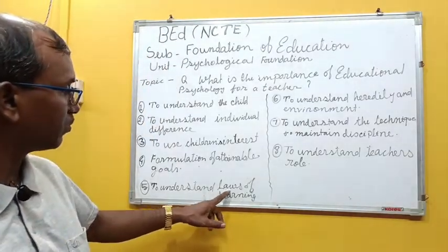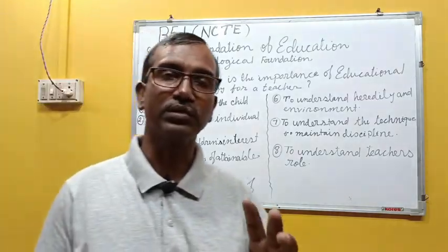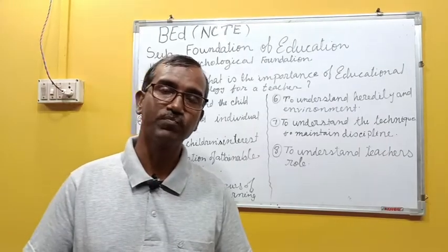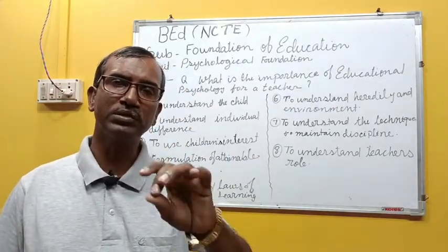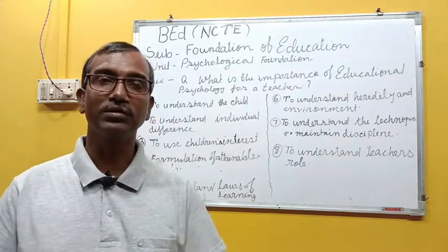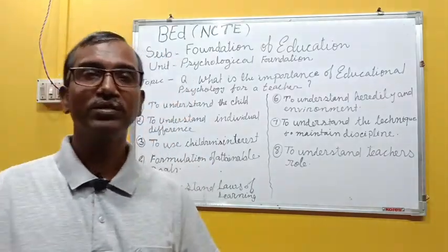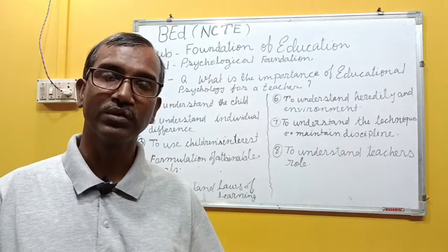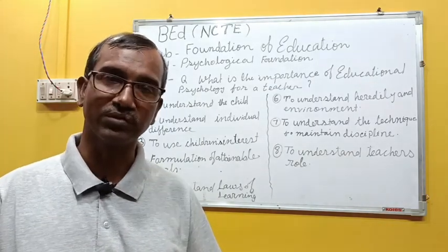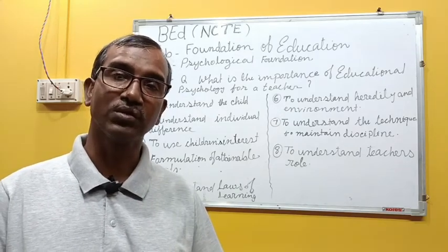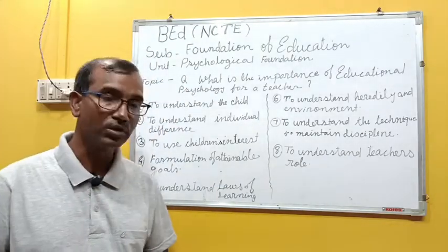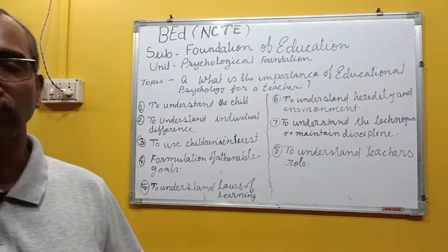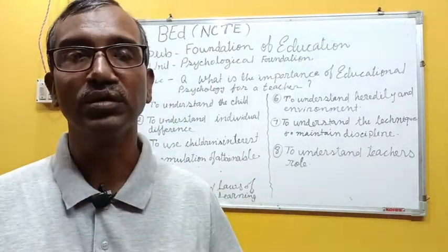Number five: to understand the laws of learning. A teacher must go through Educational Psychology to understand these laws. In Educational Psychology, there is a chapter called Learning, and in learning there is a theory called Connectionism. Thorndike, the great psychologist, put forward three basic laws of learning: the Law of Readiness, the Law of Exercise, and the Law of Effect. All these laws are very important to motivate students and ensure effective teaching, and understanding them is only possible through the study of Educational Psychology.